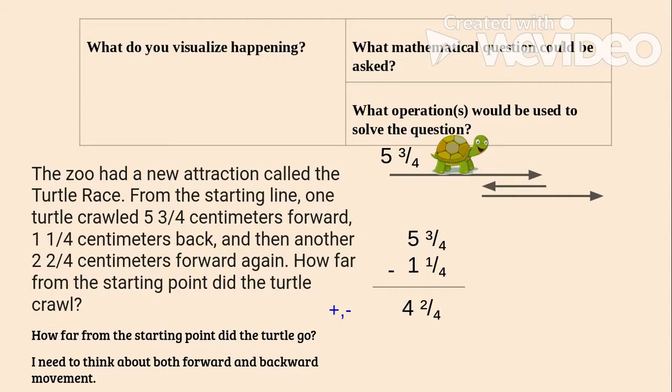Then he went forwards again. If he went forwards, I need to add to his distance. So I'm going to add 4 2/4 plus how much further he went, 2 2/4, and I get 6 4/4.